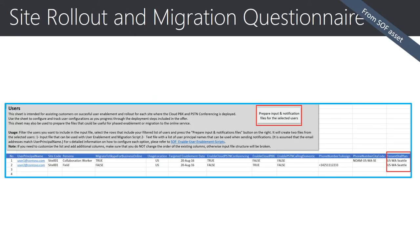I want to bring up the updates made to the site rollout and migration questionnaire. Notice the added tenant dial plan column in the user tab. This worksheet is used to list user details for an upcoming rollout and migration. By adding the new tenant dial plan column, you can use this to include the specific tenant dial plan to be assigned to a particular user. If left blank, then the default service dial plan will be used instead. Once the worksheet is populated, the button to prepare input and notification files for selected users will generate an input CSV file that can be used by the bulk enablement and migration script, facilitating the assignment of tenant dial plan as part of user enablement and migration.